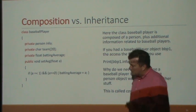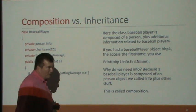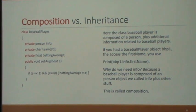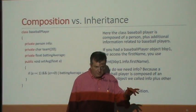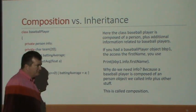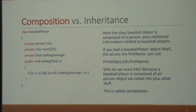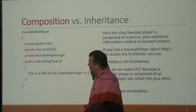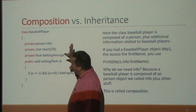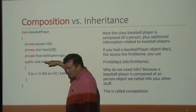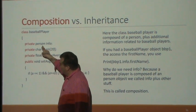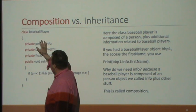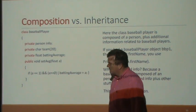Every baseball player is a person, but not every person is a baseball player. Baseball players are a subset — a specialization — of persons. Now the question is: if we were going to have a class called baseball player, should we make a field of type person and then add additional attributes? This brings up a very important distinction between composition versus inheritance — a critical part of object-oriented programming.